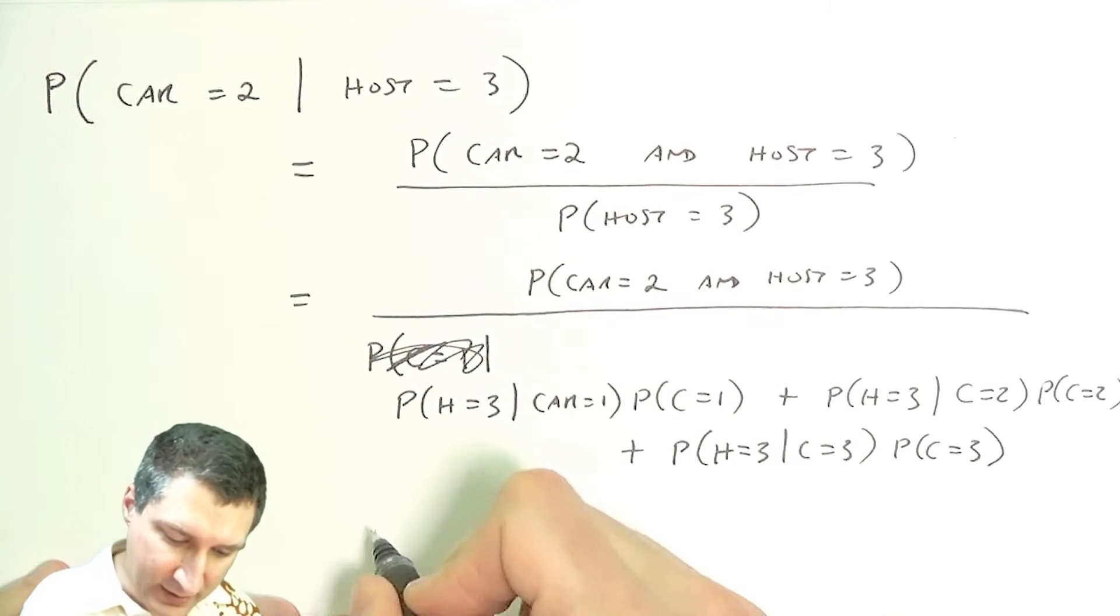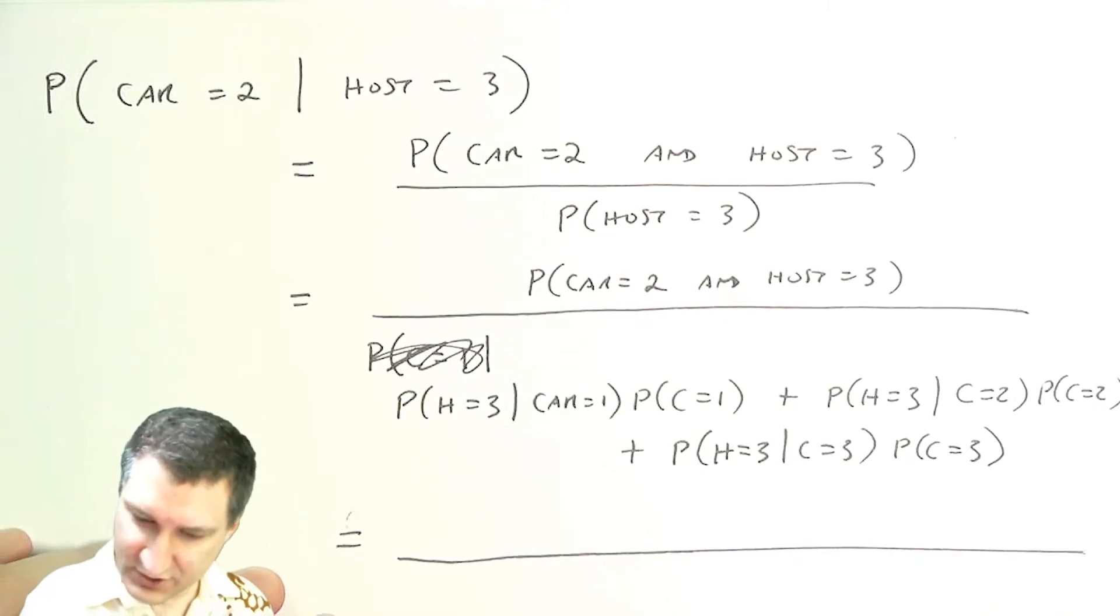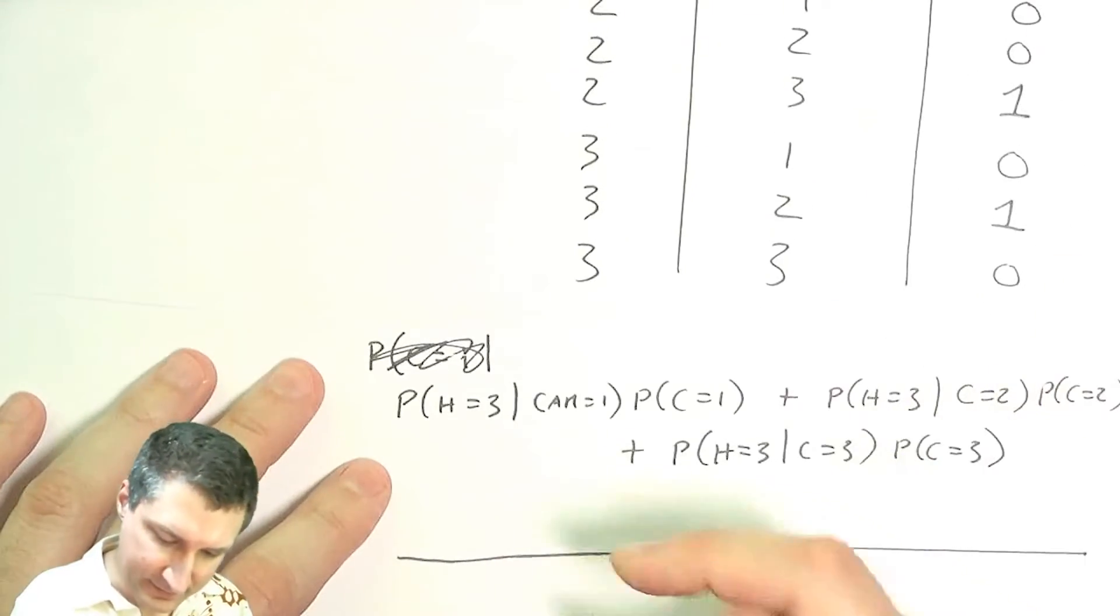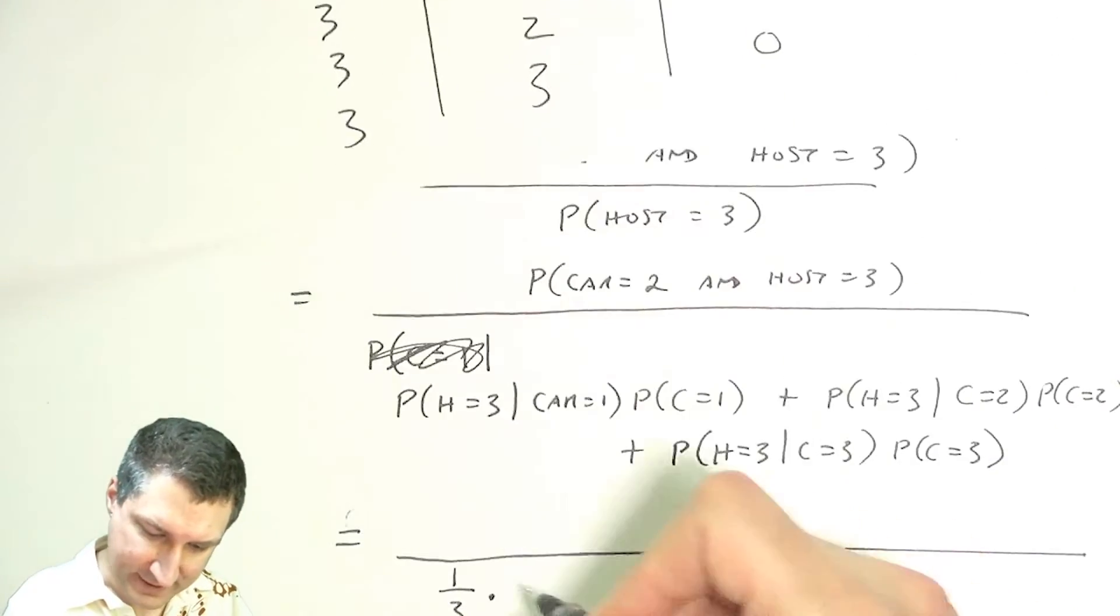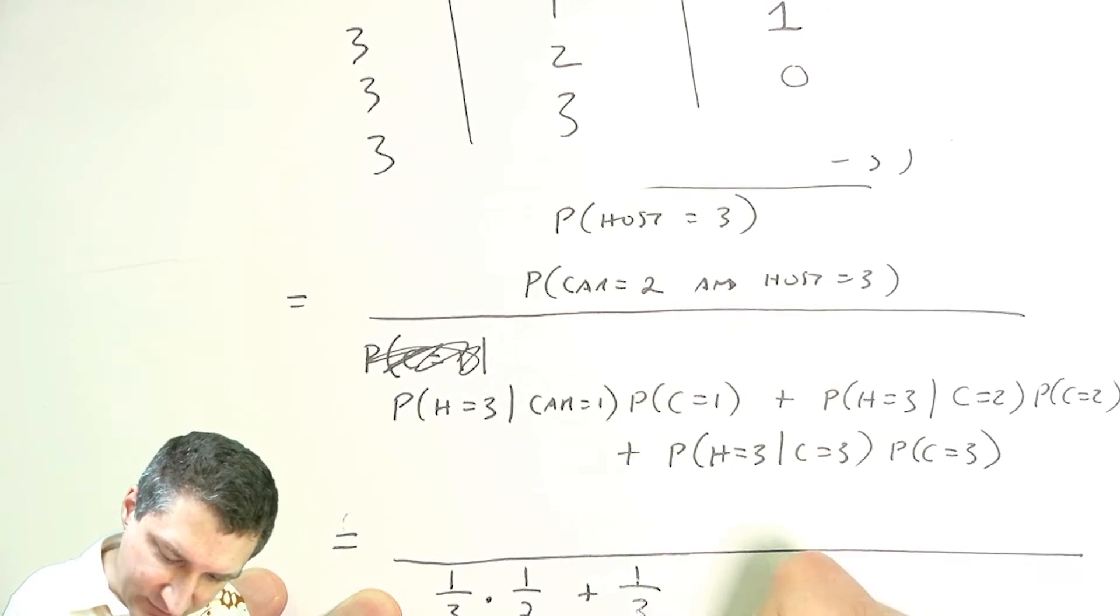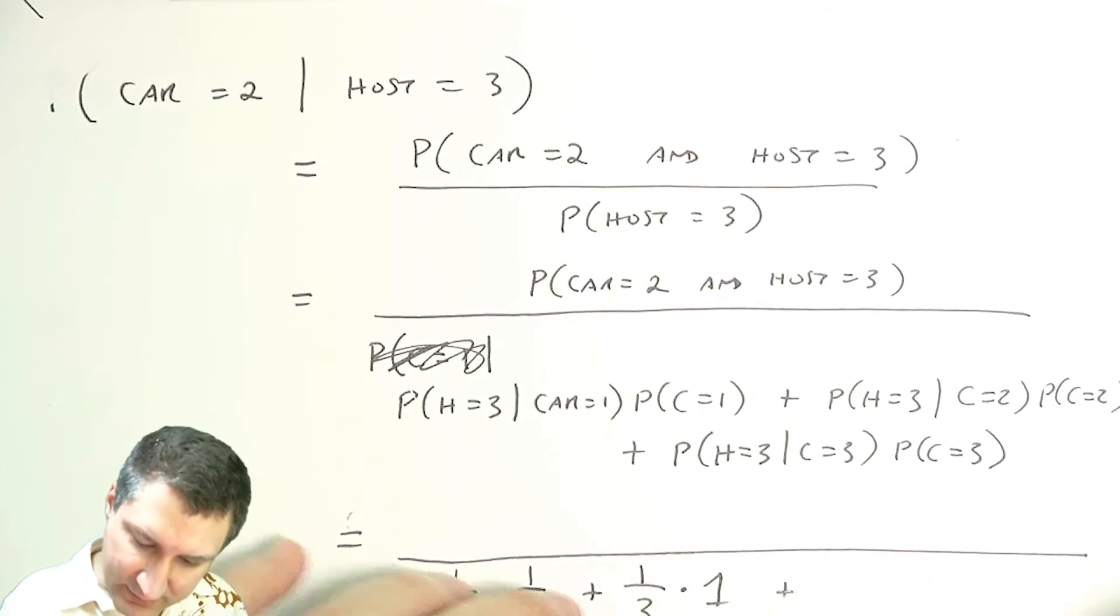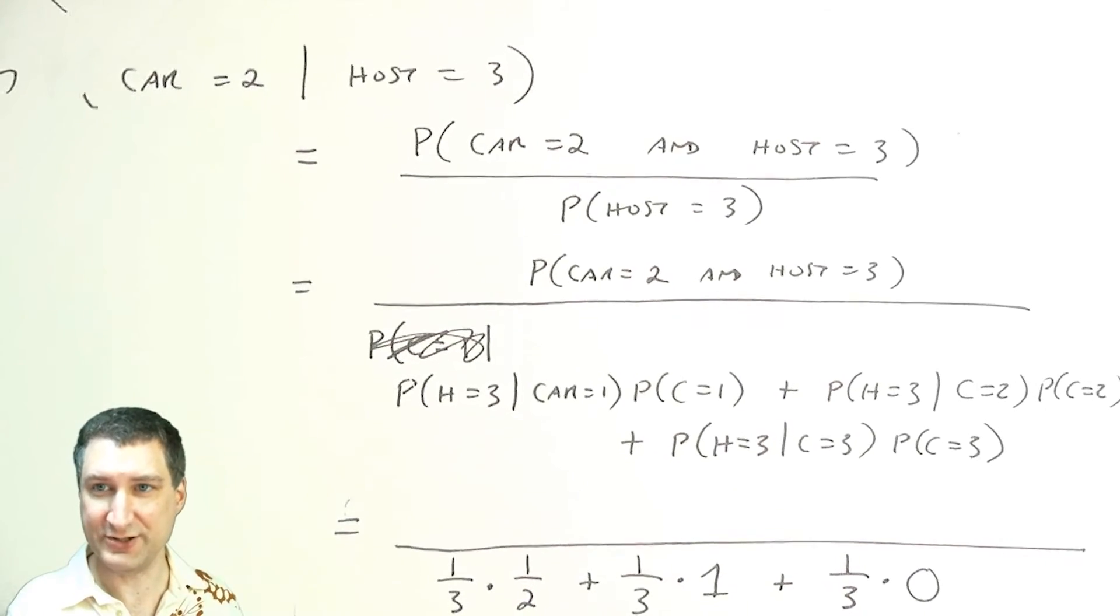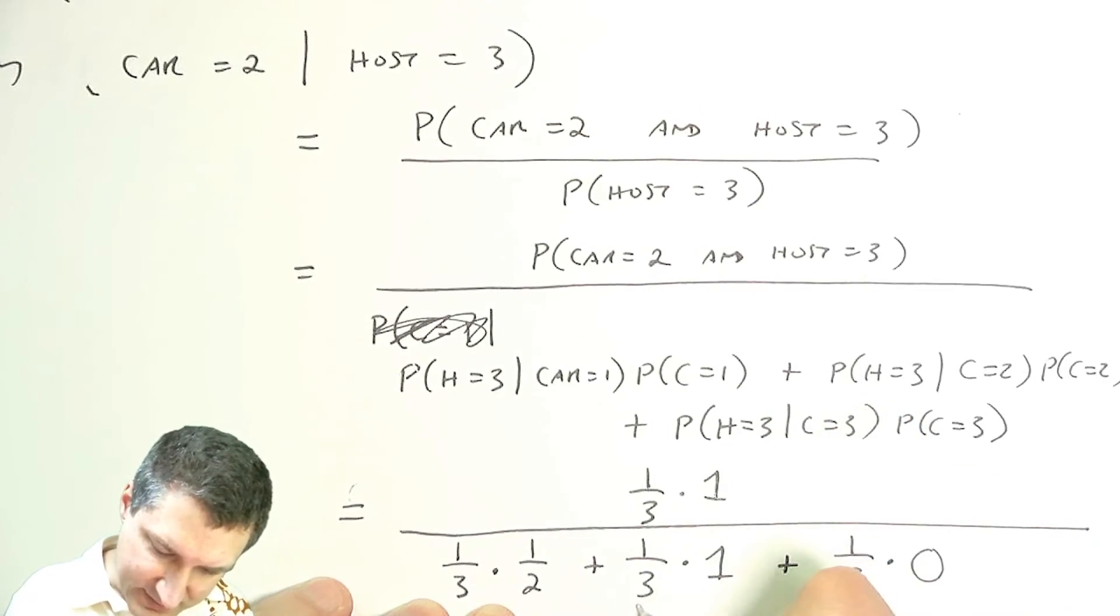So the probability that the car equals two and the host equals three—well actually let's do the bottom part first. Let's look at our table. The probability that the car is equal to one is a third, and under that circumstance the probability that the host opens door number three is a half. The probability that the car is in door number two is a third. The probability that the host opens door number three in that case is one—he has to open door number three. The probability that the car is under door number three is a third, but the probability that the host opens door three is zero. He can't open it because he's not going to show you that's where the car is.